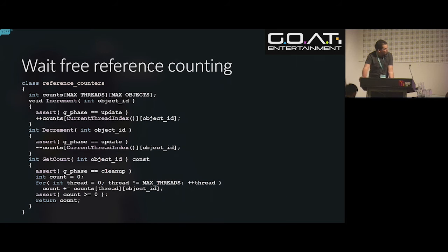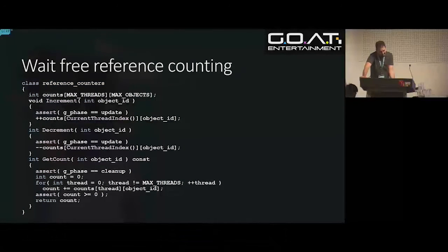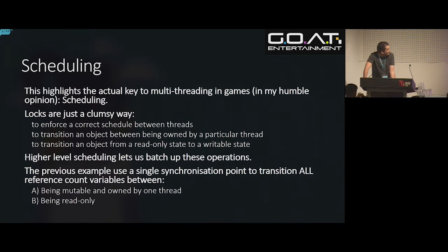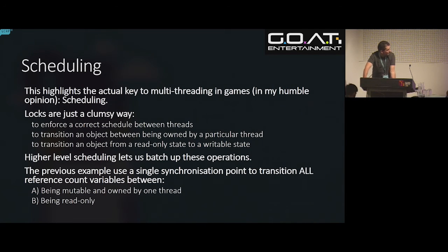That's why you want individual objects to not be thread-safe — so you can externally synchronize them with much higher-level methods like this phase idea. The key thing to making multi-threaded games perform well is not about locks — that was my naive school answer. The actual answer is that it's all about scheduling. You need to figure out how to schedule your game. Locks are just a clumsy way to ensure your schedule is correct, a clumsy way to make sure one thread owns data or every thread can read it, to transition objects around.